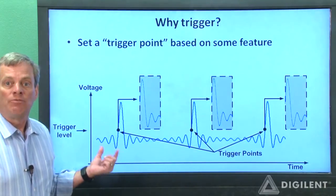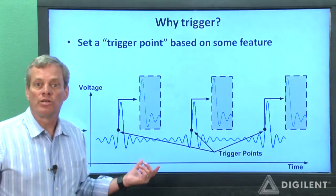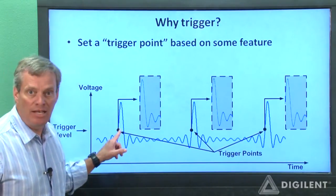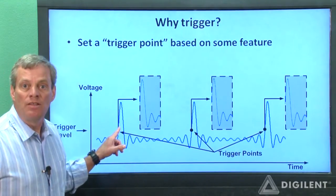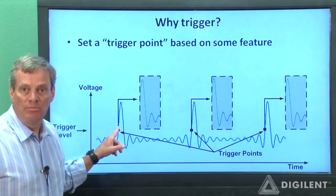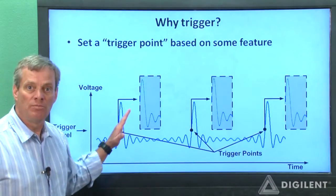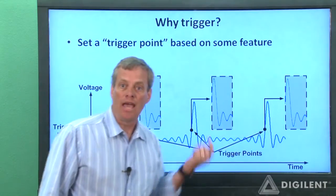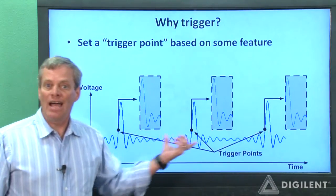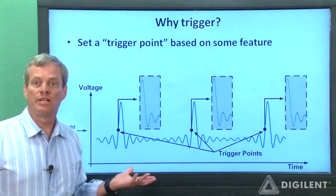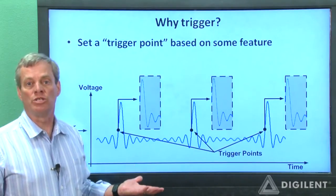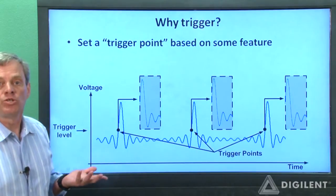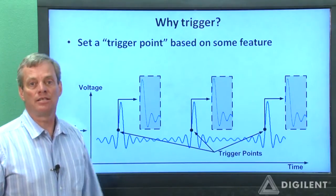So now let's look at what happens if we acquire our data based on some trigger point. In the example shown here, we're triggering — that is, beginning data acquisition — based on the value of the signal being at a certain level and the slope of the signal being positive. Now all the frames of our movie look the same, so if we successively flash these frames in front of a person, it'll appear that the waveform is frozen and we can read the data we need at our leisure. This approach works best, of course, for periodic signals.